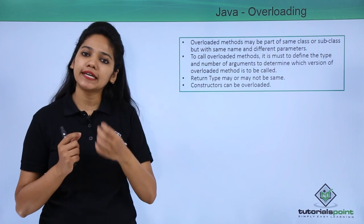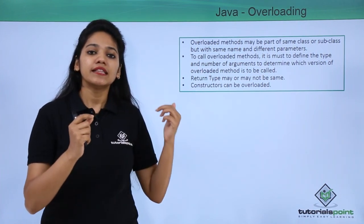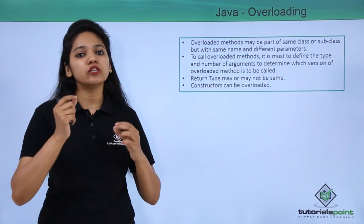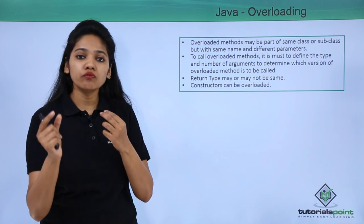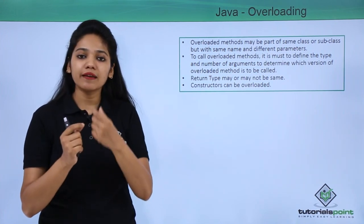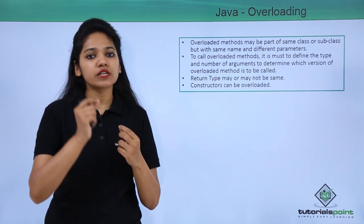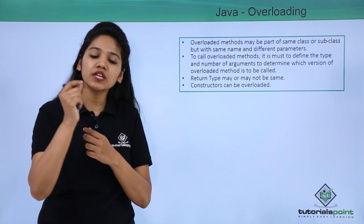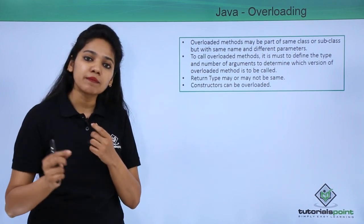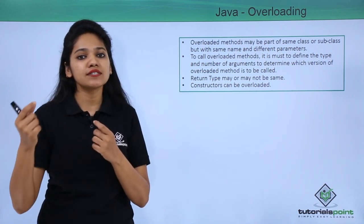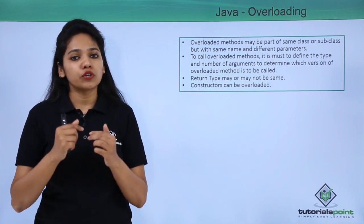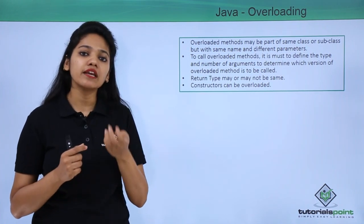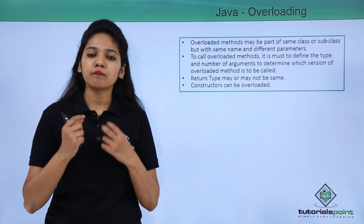For example, if you have a method 'display' with one string variable, and the next 'display' method has one string and one integer variable, you must call each method with its own signature. You call it as object reference dot method name with the matching values. You cannot swap the order — you cannot write integer comma string if the declaration has string comma integer. The return type may or may not be the same.